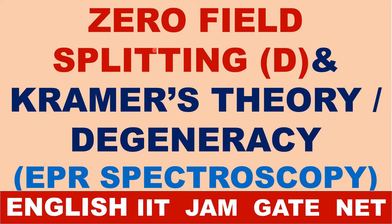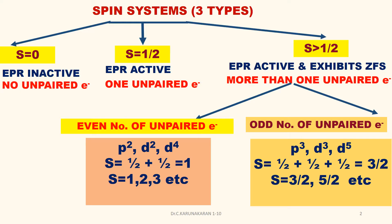Good morning. Let us study today zero field splitting. What is called zero field splitting? It is represented by D — it is a zero field splitting tensor — and Kramers' theory. What is called Kramers' degeneracy in EPR spectroscopy? Before we study zero field splitting, let us study about spin systems.